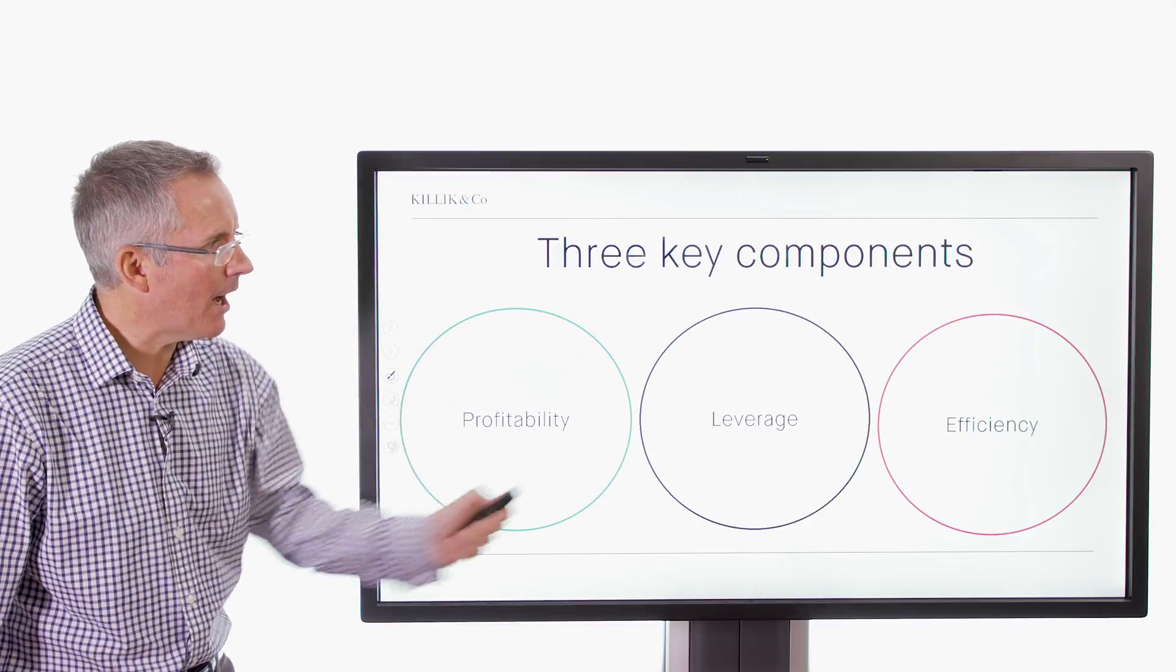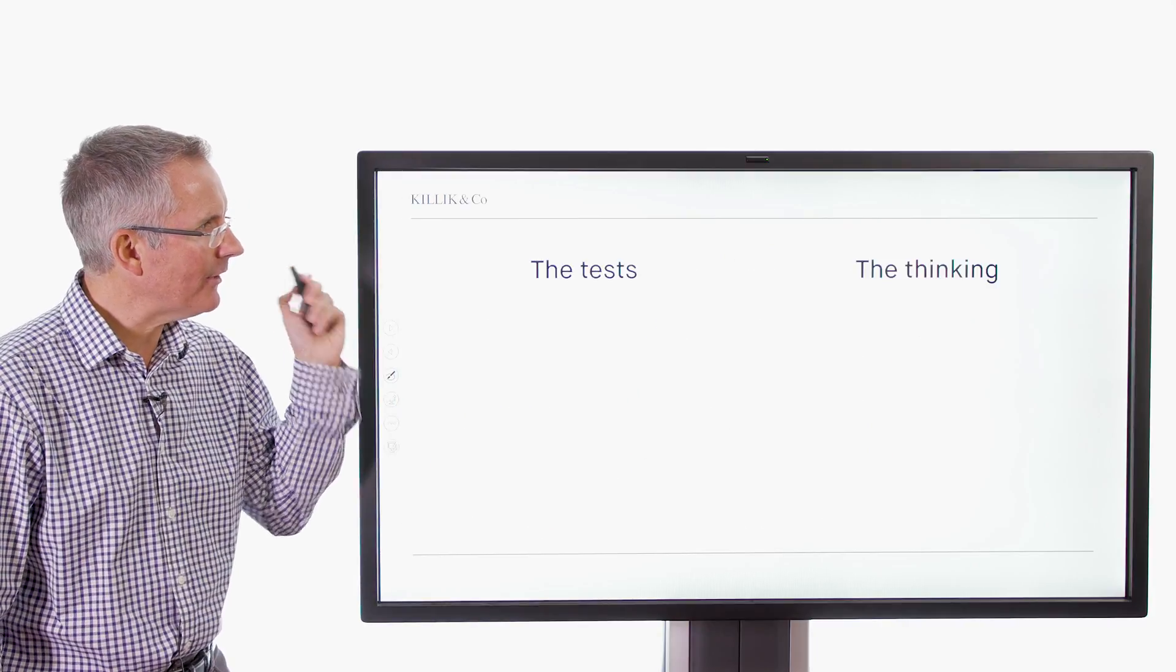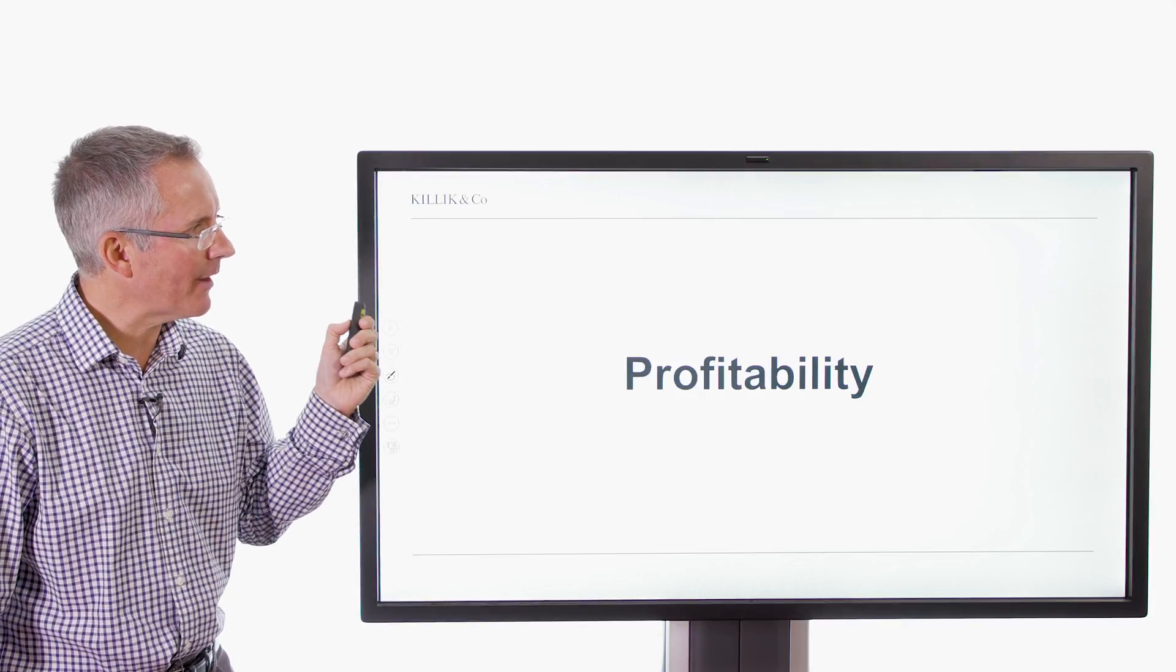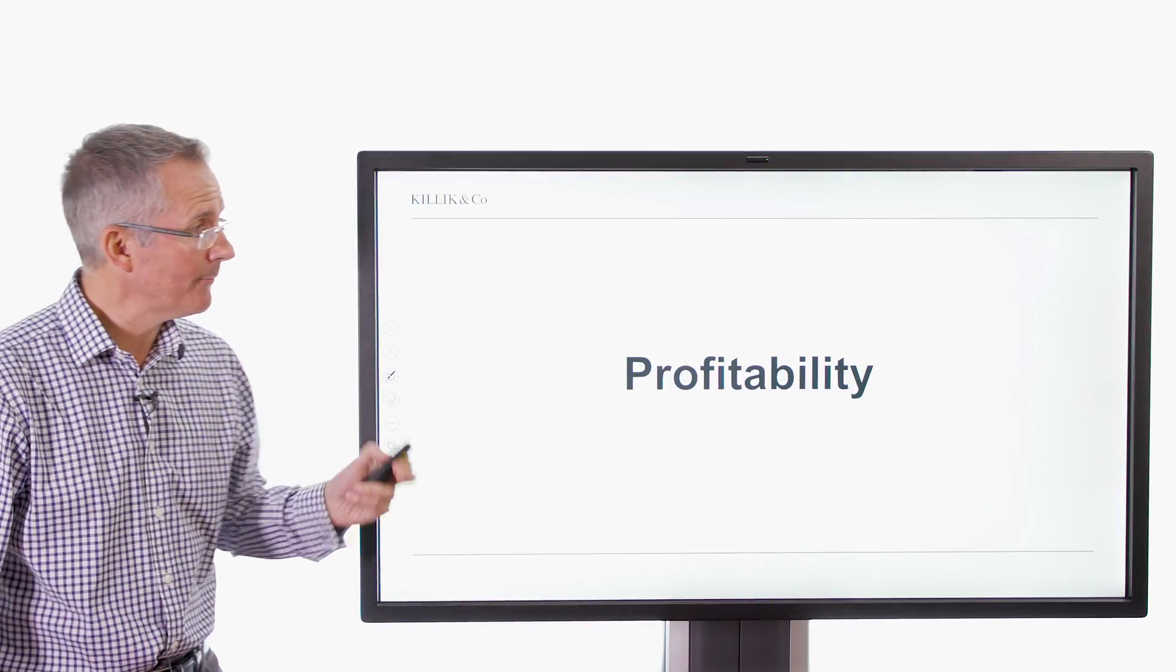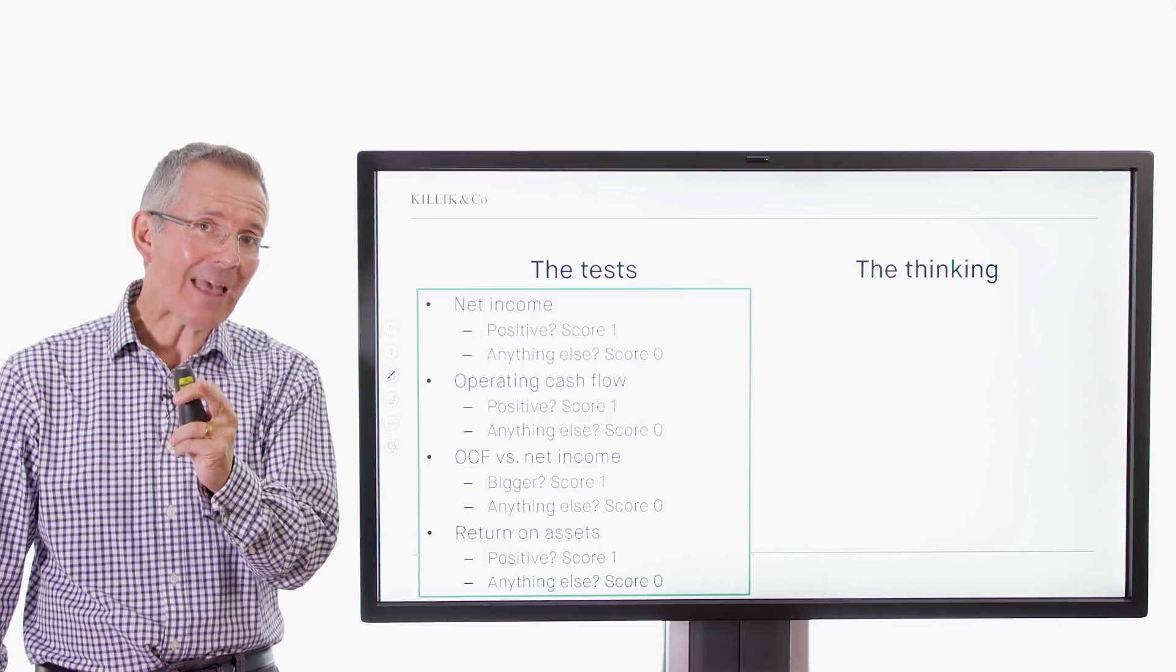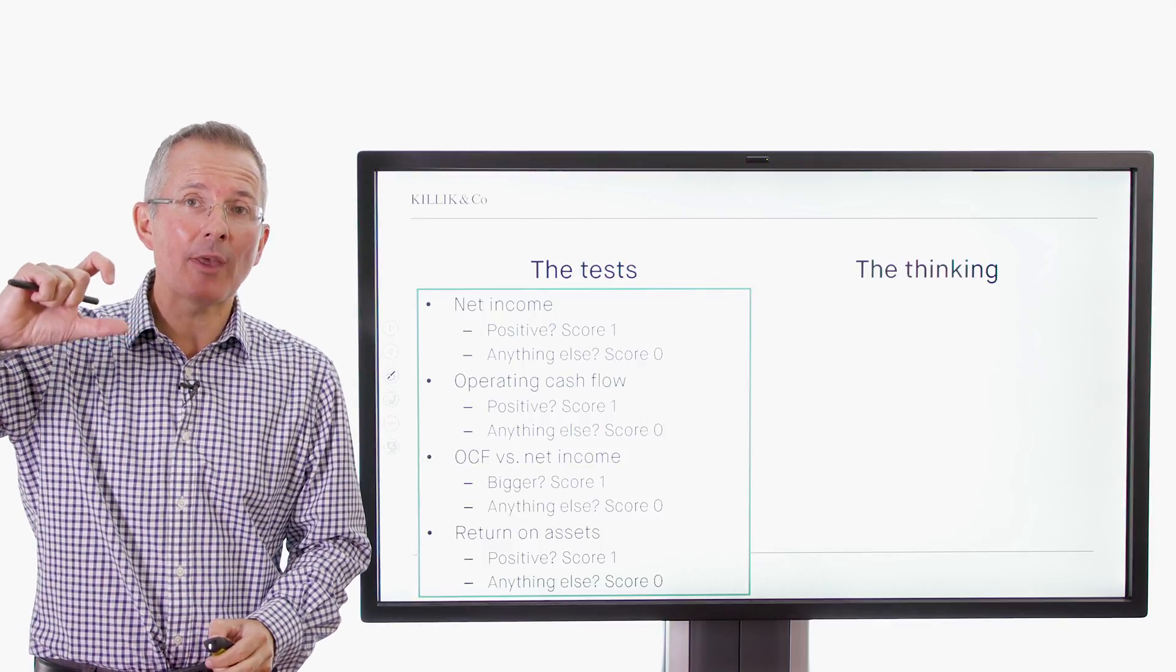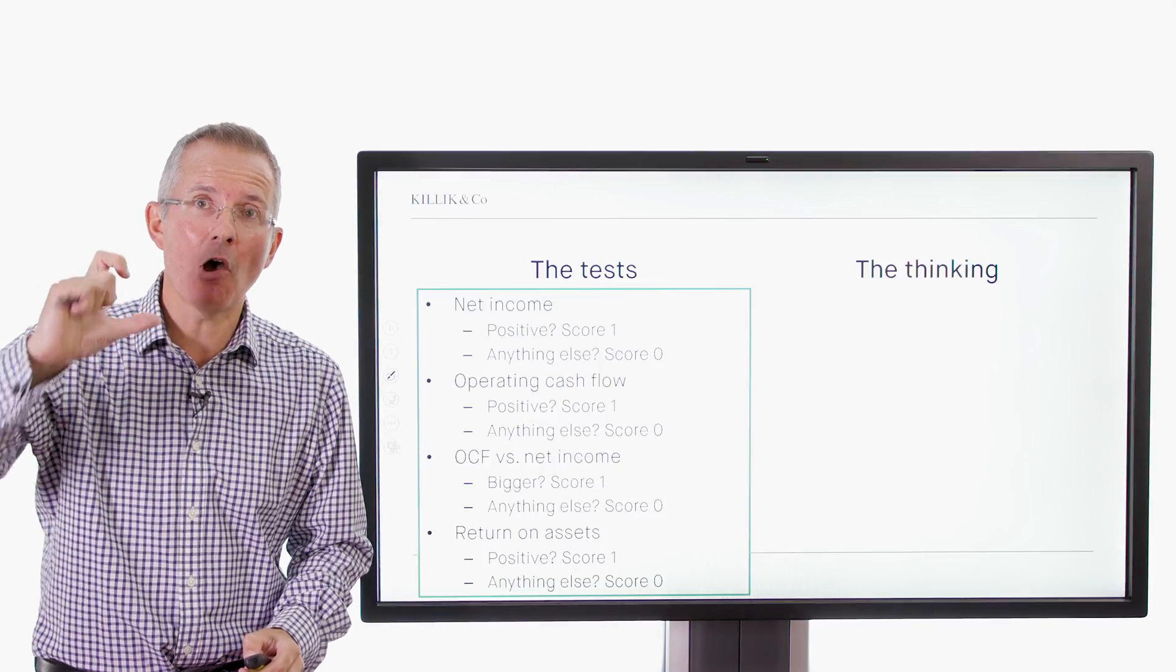So what are the tests that make up these three broad categories? Well, I cover these in detail in other videos. So I'm going to just run through them fairly quickly here. At the end, I'll give you an address for those other videos. But here we go. Profitability is set one. So the tests—the way this works is you either get one point or none. And that's it. And there are nine tests.